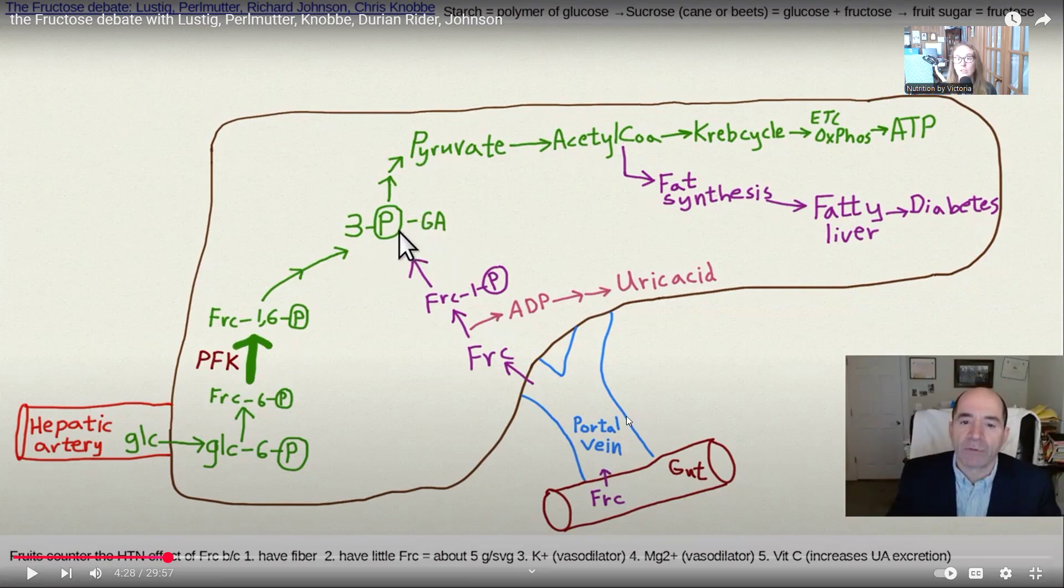But fructose doesn't need insulin to be absorbed. So it can actually be quite insulin friendly in terms of if you're somebody who is moving towards insulin resistance to insulin sensitivity because fructose requires less insulin to be utilized. And that's because it gets, you eat it, it goes into your blood, it gets transported through the portal vein and into the liver for utilization.